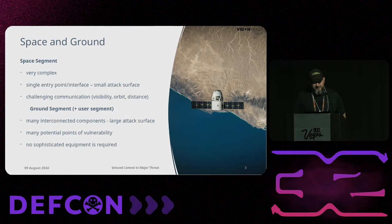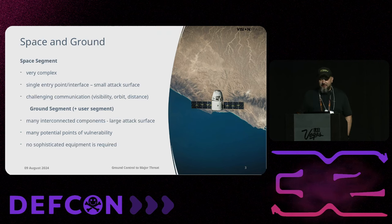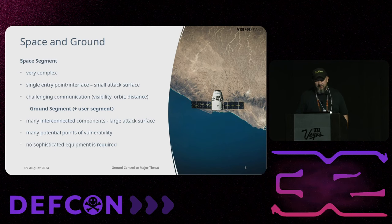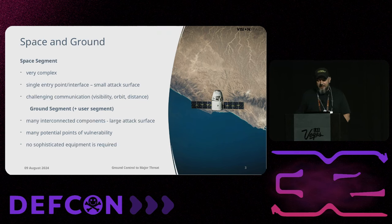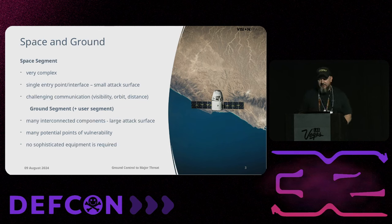In this presentation I'll briefly compare the space segment with the ground segment in terms of attack surface. Every space mission can be divided loosely into a space segment and a ground segment. The space segment is usually much more complex, however it is just one node in the whole system — the satellite has only one entry point interface, giving it a very small attack surface.